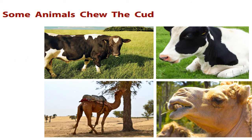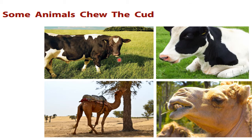Now let us see about some animals that chew the cud. Have you all seen the cow and buffalo? They are always chewing their food — that is chewing the cud. Cud is a portion of food that returns from an animal's stomach to the mouth to be chewed for the second time. Animals like cow, buffalo, and camel first nibble their food and put it inside their bodies.